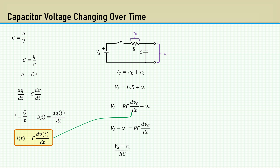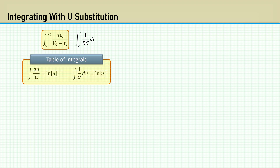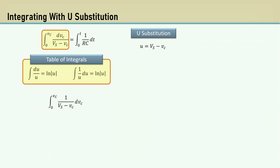I'll rearrange this into a form to have the voltages on the left, then integrate the capacitor voltage part from 0 to an arbitrary value of VC and integrate the right side from 0 to an arbitrary value of T. Let's work with just the left-hand side now. From a table of integrals, dU over U is the natural log of the absolute value of U — sometimes written as 1 over U dU. We can integrate this using the U-substitution method where U equals VS minus VC. Taking the derivative of both sides: since VS is static and does not change, its derivative is 0, which gives us dVC equals minus dU.